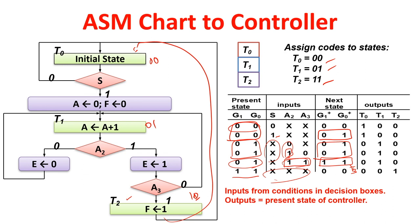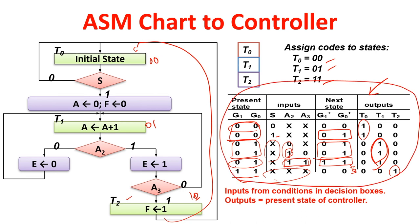The output depends on which state you are in — at state T0 what is the output, at T1 what is the output, at T2 what is the output. From this state table we can determine the next state logic, and since in ASM the output logic depends on the current state, we generate those signals based on state.